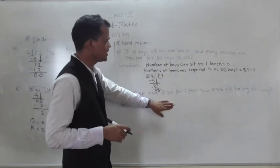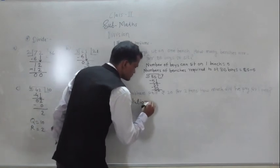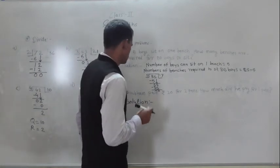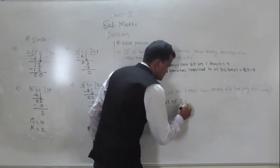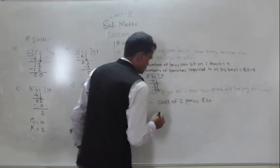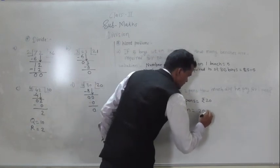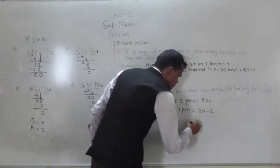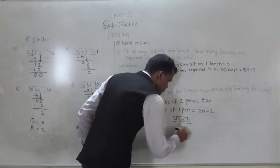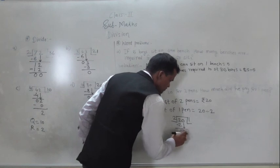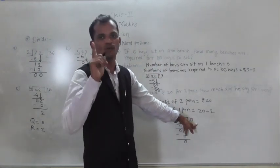Next example: Shumam paid Rs. 20 for 2 pens. How much did he pay for 1 pen? Cost of 2 pens equals Rs. 20. Hence, cost of 1 pen equals 20 divided by 2. First digit is 2: 2 ones are 2, subtract 2 from 2 to get 0. Take the next digit down: 0. 0 divided by 2 is 0, subtract 0 from 0 is 0. So the answer is 10 — the cost of 1 pen is Rs. 10.